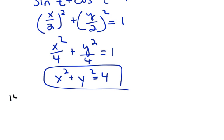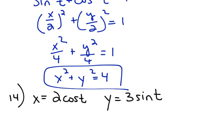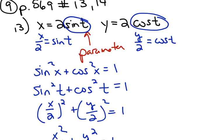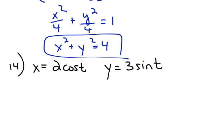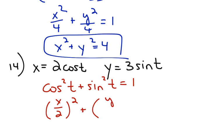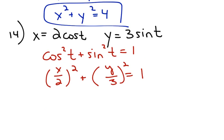Let's look at problem number 14, where x equals 2 cosine t and y equals 3 sine t. Notice that in the previous problem, the number multiplied by the trig function was the same for both x and y. Here they're not the same, so it's going to be an ellipse. Using the same trig identity, cosine t equals x/2 and sine t equals y/3. So we find the equation of the ellipse: x² over 4 plus y² over 9 equals 1.